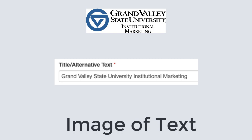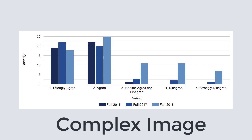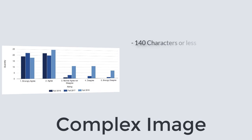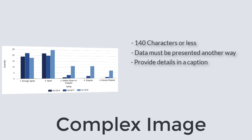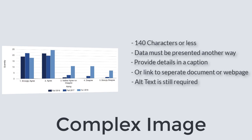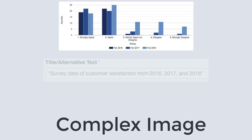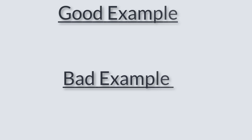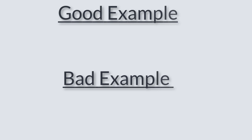Last is the complex image, such as a graph or chart. If the complex image cannot be described in a concise way — roughly 140 characters — then the information needs to be provided in another way. One recommendation would be to include the details of an image as a caption, or to provide a link to the information in a separate document or webpage. Please note that the alt text for the complex image is still required and should describe the general point of the image. The example alt text would be: 'survey data of customer satisfaction from 2016, 2017, and 2018.' Alt text does not need to include 'image of,' 'photo of,' 'logo of,' etc. The screen reader will notice that this is an image and state that prior to reading the alt text.